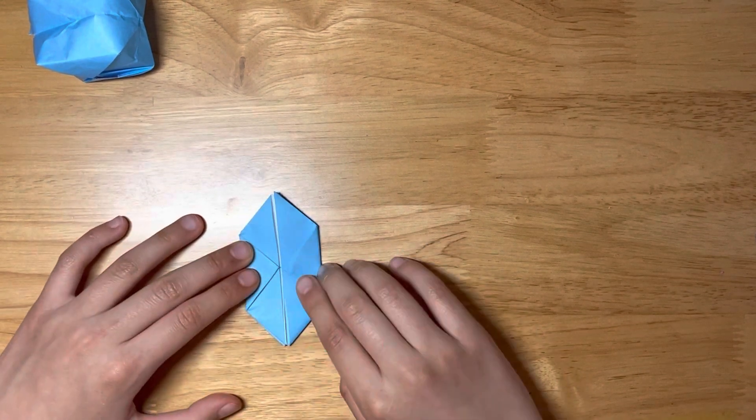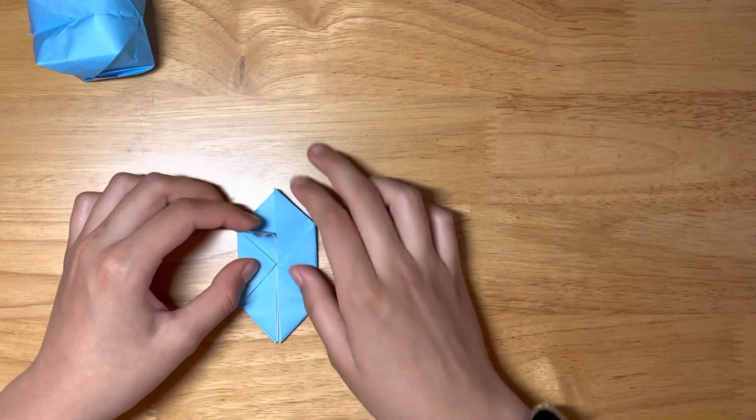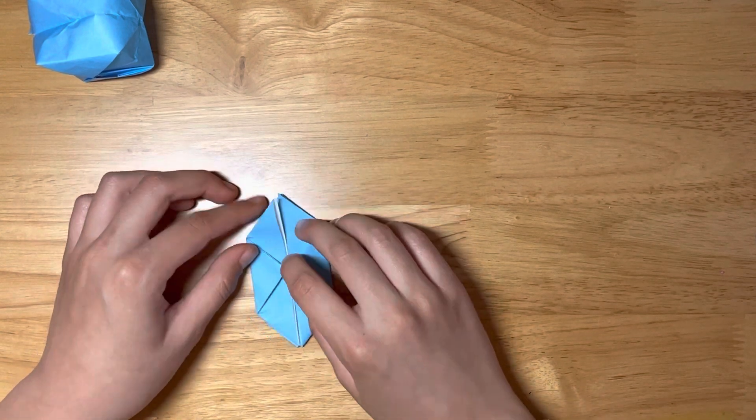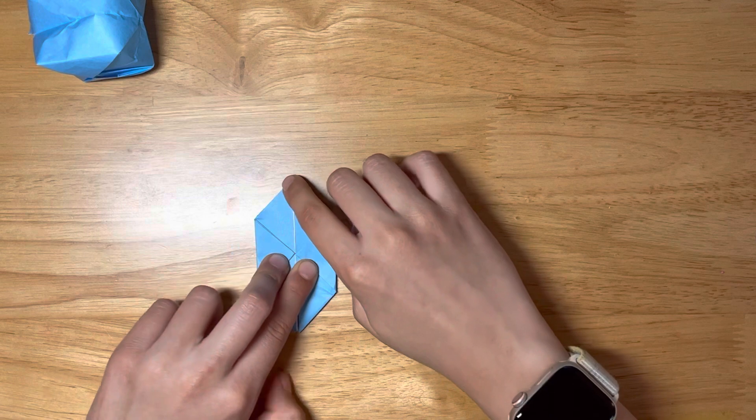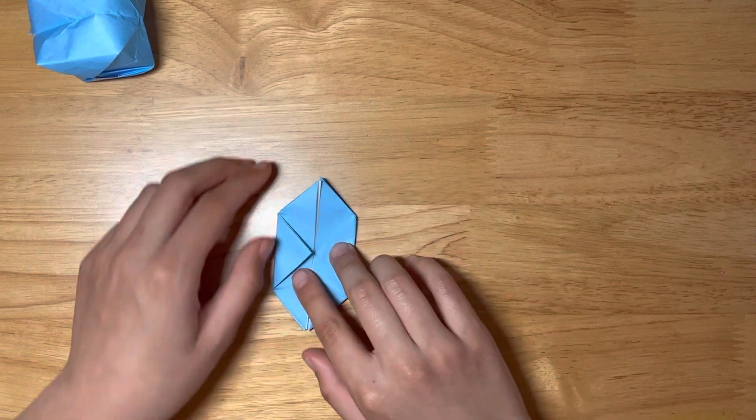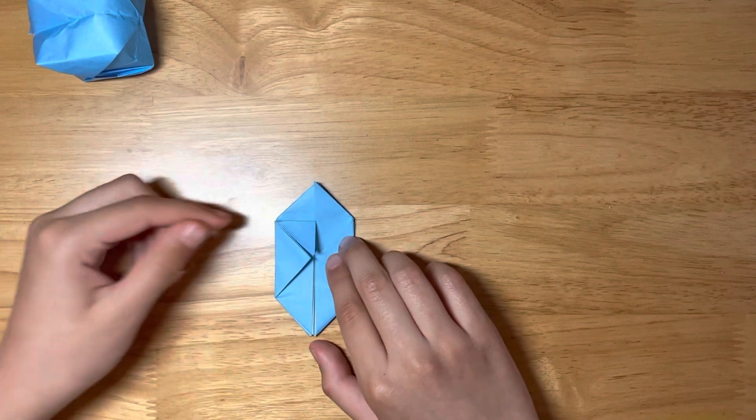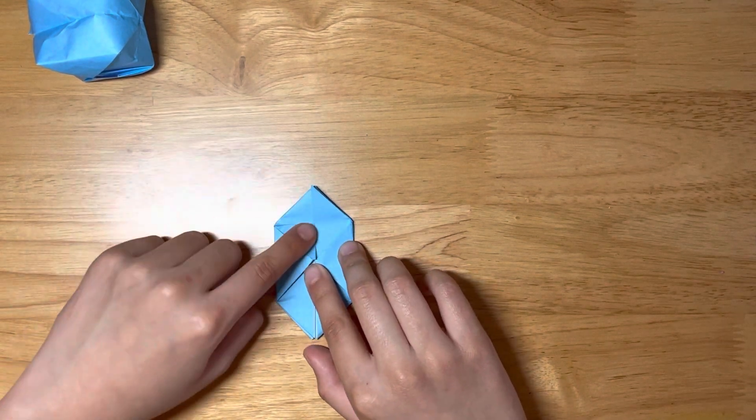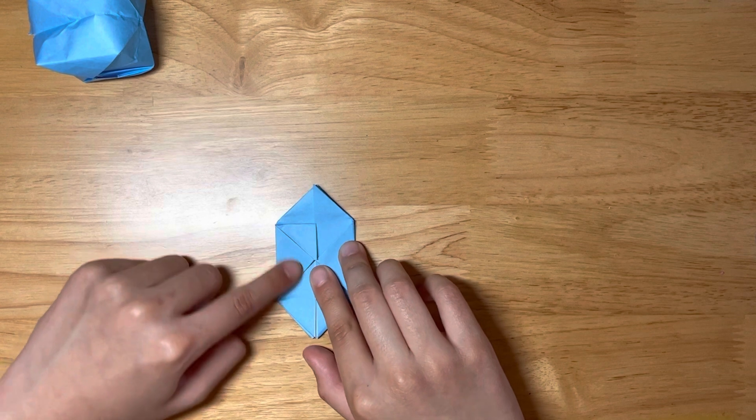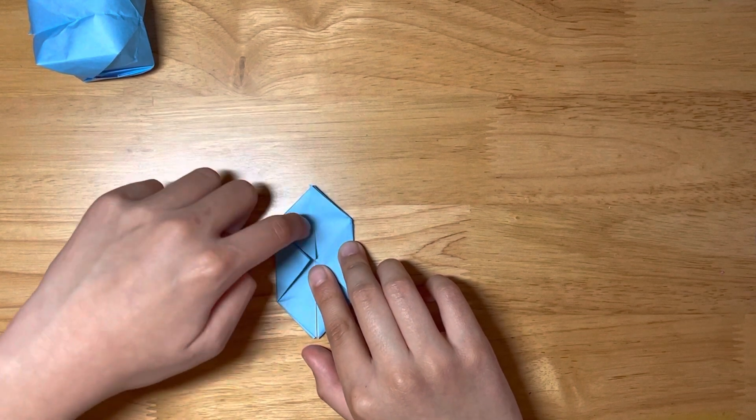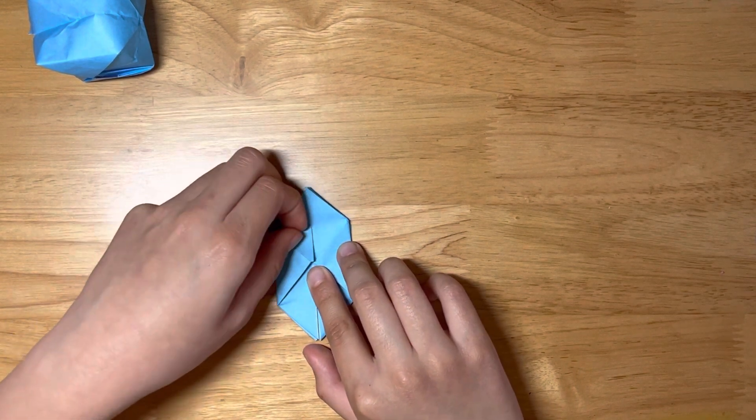Next we're going to - you have these little flaps over here, we're going to put this to here. So I'm going to fold it like that, and then we're going to fold this little triangle over here. So this to here, like this.